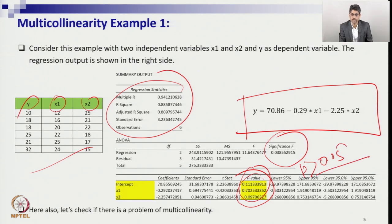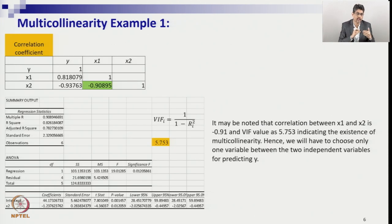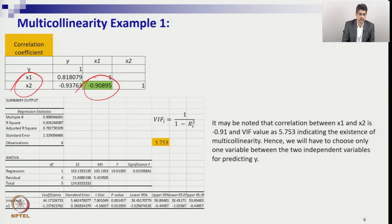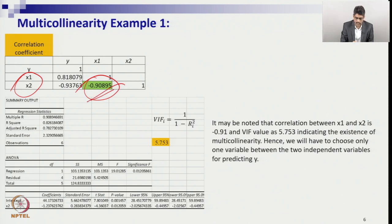We have two independent variables and a dependent variable, and we fitted the regression. The R-squared might be high, but look at the p-values — none of them are significant; all are greater than 0.05. This indicates there are some issues. We then checked multicollinearity by calculating VIF. First, we tested the correlation between the two independent variables and found a correlation coefficient of minus 0.9 — a strong negative correlation, almost 90%. Therefore, the two independent variables are highly correlated, indicating multicollinearity.